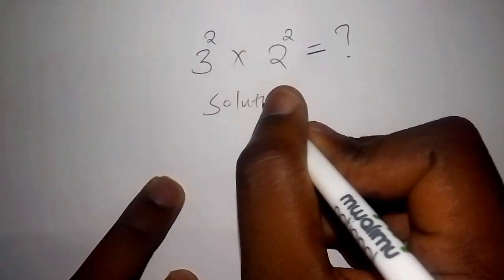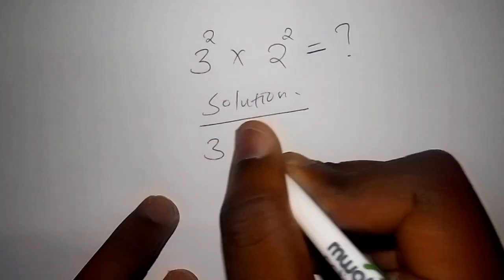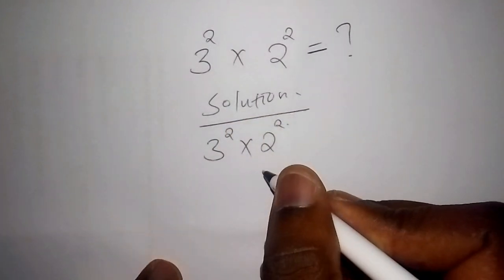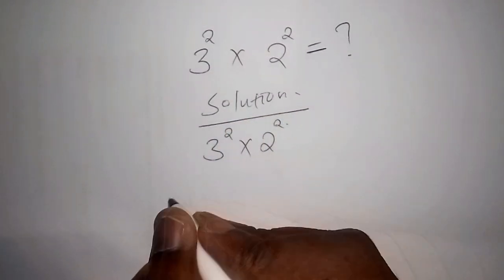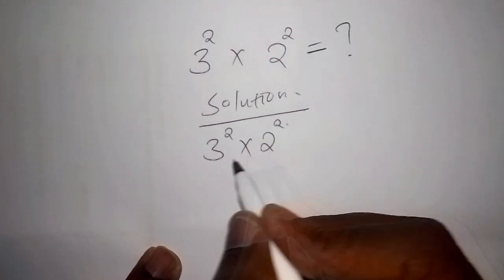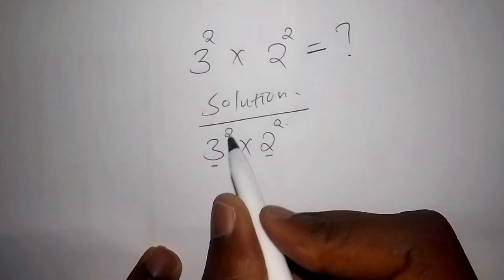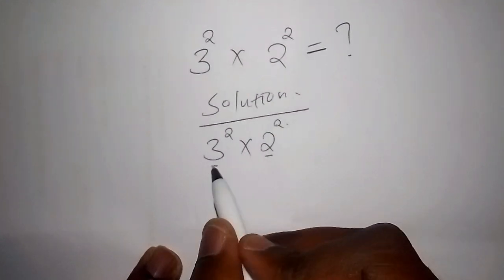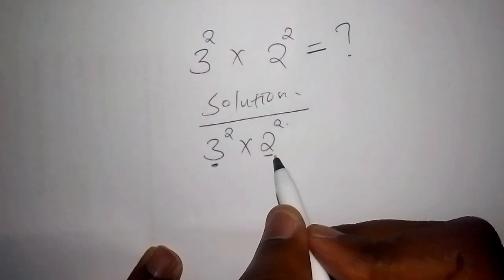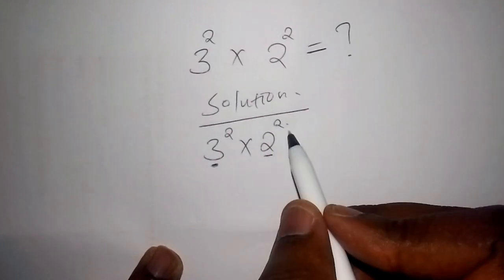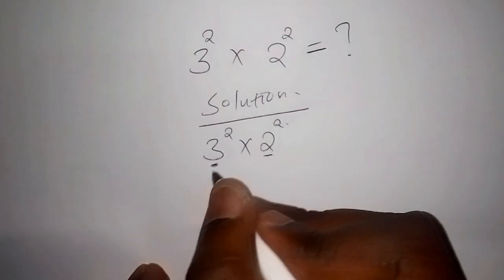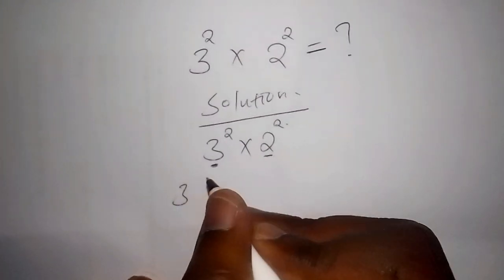We have three to the power of two multiplied by two to the power of two. Now, three and two are the bases, and two and two are the powers. As you can see, base three and base two are different, so you cannot apply the rules of powers directly.